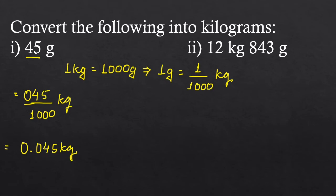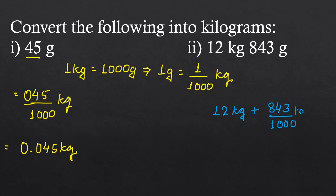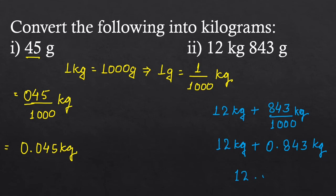The next part is 12 kg and 843 grams. It will be written as 12 kg plus 843 upon 1000 kilograms, which equals 12 plus 0.843 kilograms, giving 12.843 kilograms.